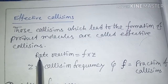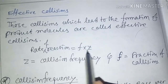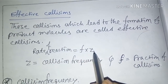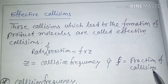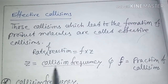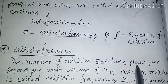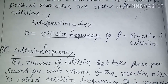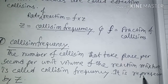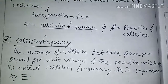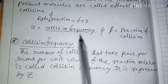The rate of reaction is given by: Rate = F × Z, where Z equals collision frequency and F equals fraction of effective collisions. The number of collisions that take place per second per unit volume of the reaction mixture is called collision frequency, represented by Z.